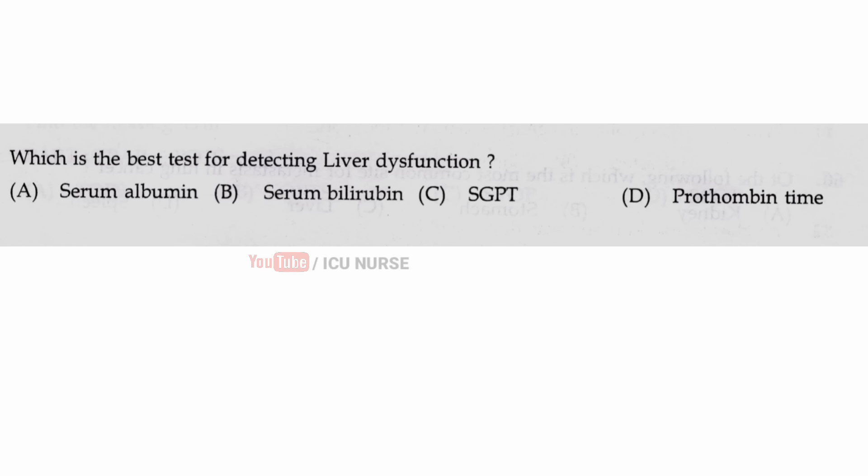Which is the best test for detecting liver dysfunction? The correct answer is B, serum bilirubin.